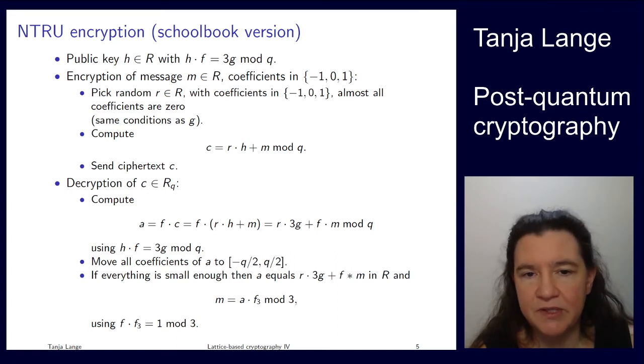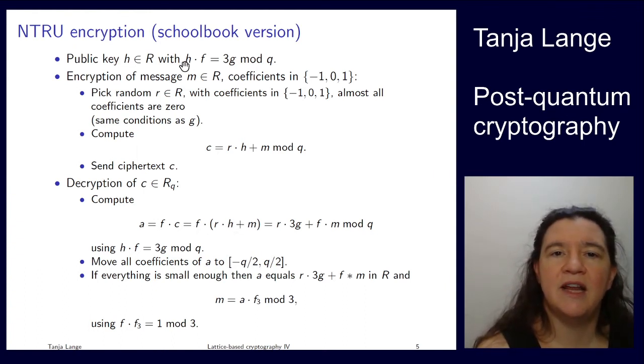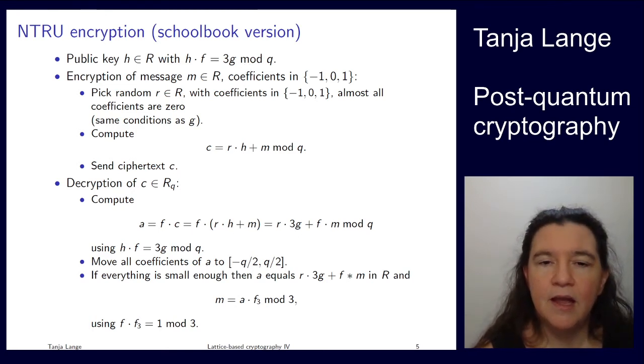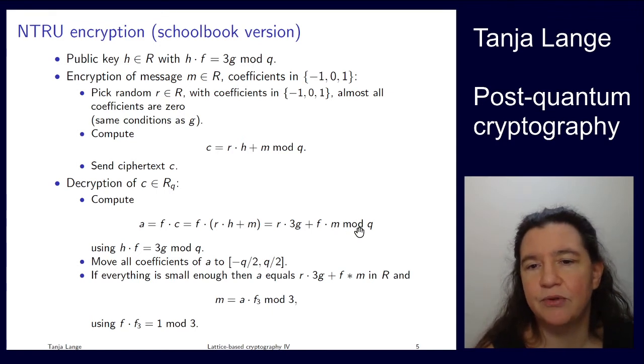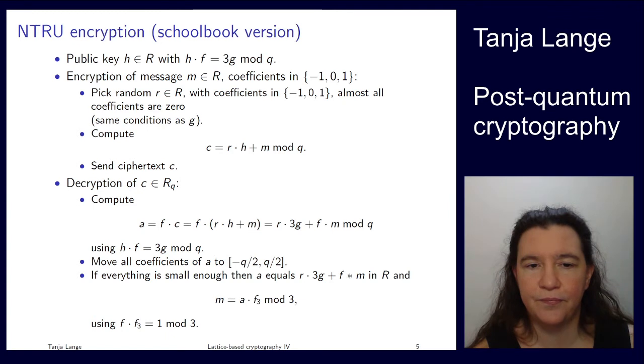Okay, this is always something that only she can do. Let's look what happens there. So she then has f times r times h. Well, let's look at what the definition was. Ah, h times f is 3g. So we can replace this part by 3g. And then there's still f times m. And this was mod q, so we can compute this mod q.